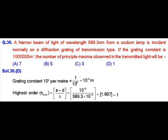MTP3 Question number 30: A narrow beam of light of wavelength 589.3 nanometers from a sodium lamp is incident normally on a diffraction grating of transmission type. If the grating constant is 10 raised to the power 6 per meter, the number of principal maxima observed in the transmitted light is what we have been asked to calculate.